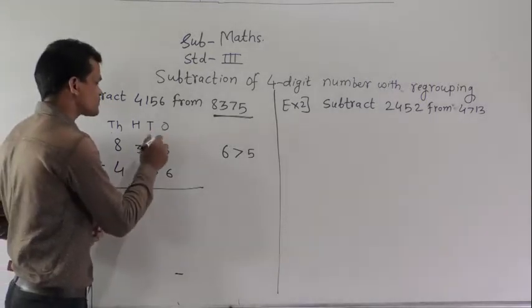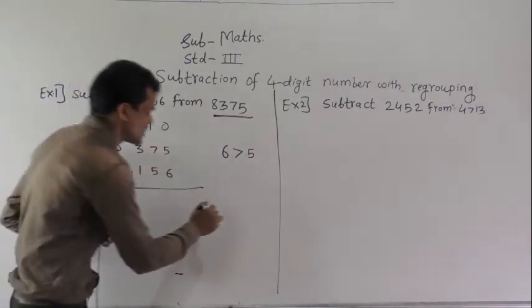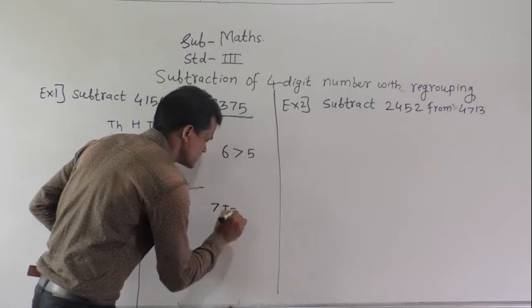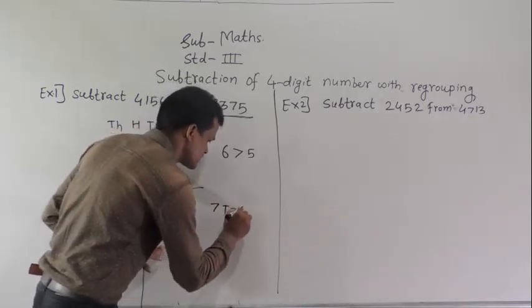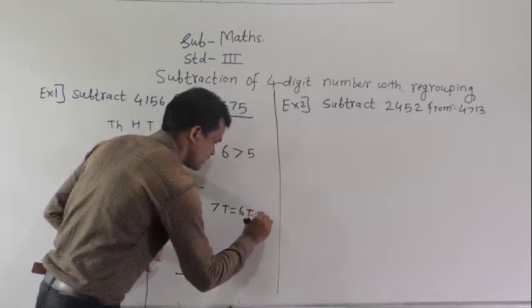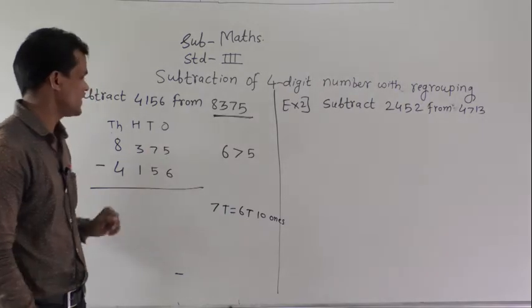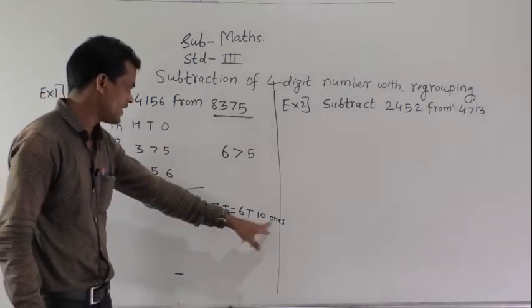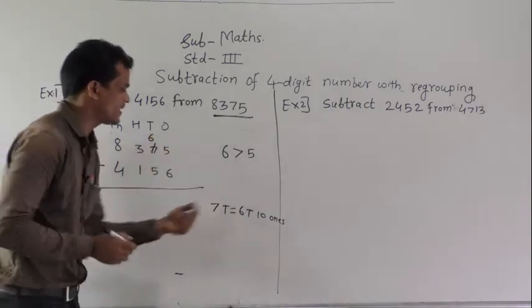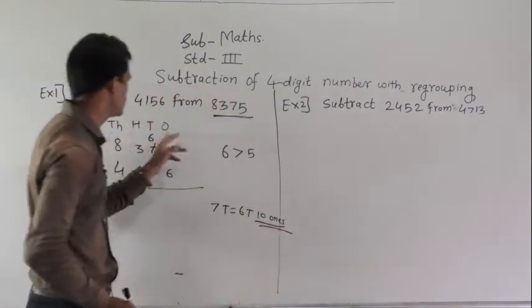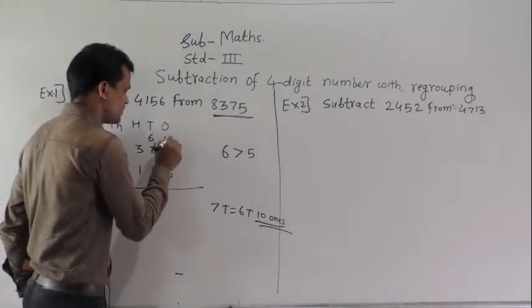We have to regroup these 7 tens. 7 tens means regroup like this: 6 tens and 10 ones. Write 6 here, and those 10 ones are added into the ones column. So 5 plus 10 equals 15.